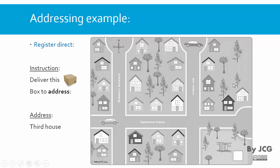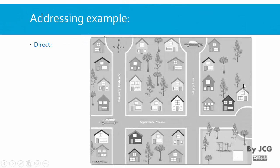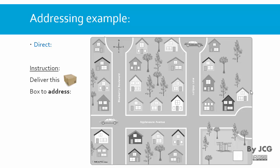What happens is that when you say this, the box is going to be delivered to the third house. What's the difference with the direct addressing? Well, the difference is in the instruction. If you want to deliver a box to an address different than the first six houses, let's suppose you want to deliver it to Lollipop Lane number 3. Here the address is not the number of the house, but instead the name of the street and also the name of the house. With this information, you can deliver the box to the appropriate house.